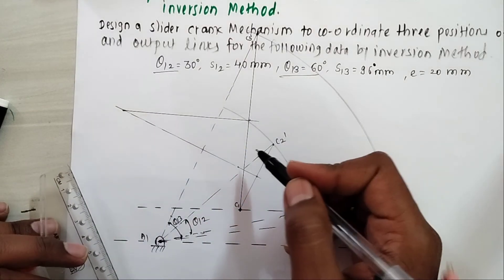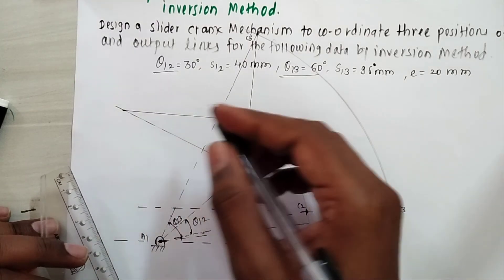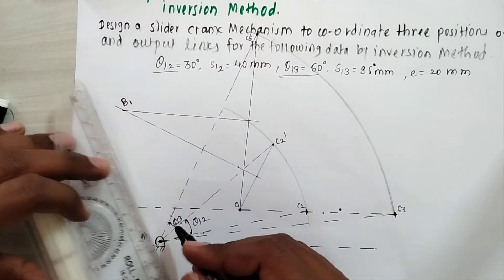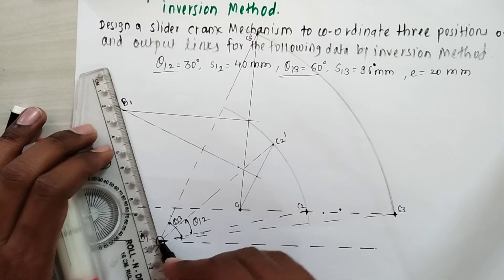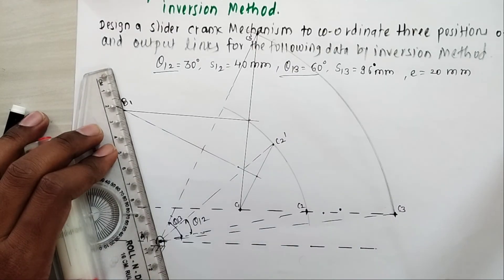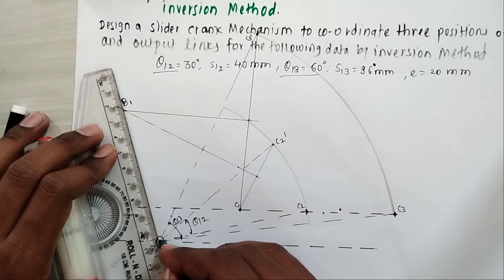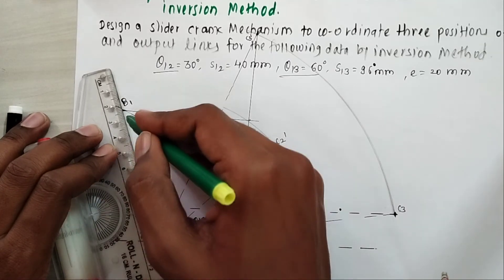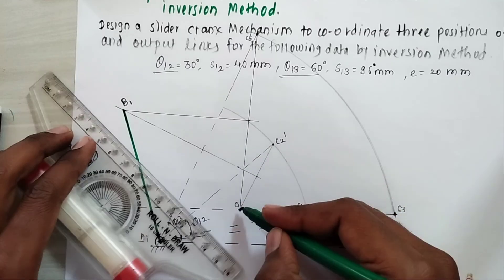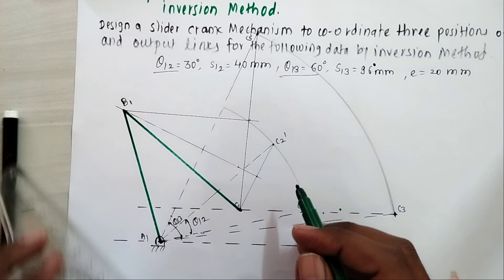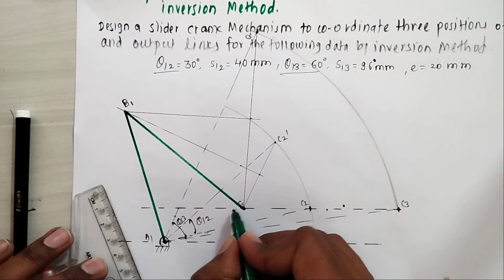The intersection of these two points represents your B point, that is B1 point. A1B1 represents your crank, and B1C1 represents the coupler connecting crank and slider.